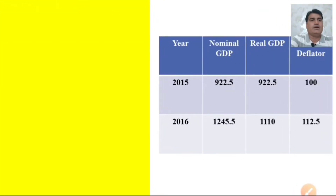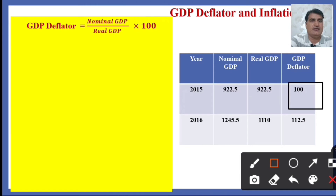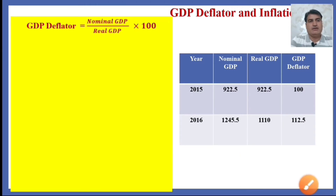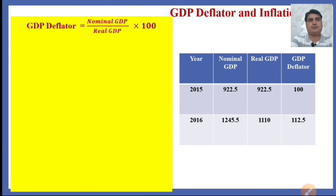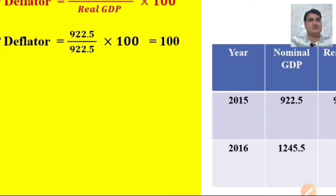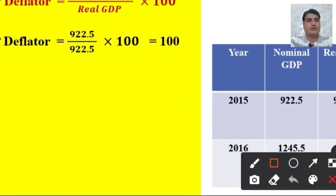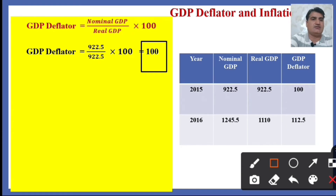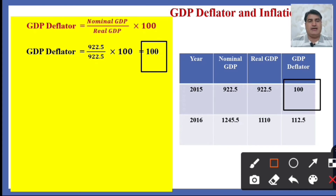The nominal GDP for 2015 is $922.5 and the real GDP is also $922.5, so the GDP deflator is 100. The GDP deflator is the ratio of nominal GDP to real GDP multiplied by 100: 922.5 divided by 922.5, multiplied by 100, equals 100. The deflator is 100 because nominal and real GDP are the same, meaning there is no rise in price for the base year.